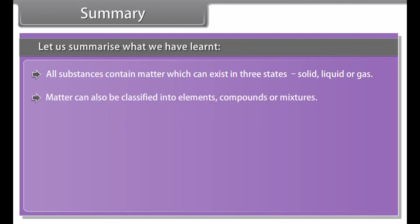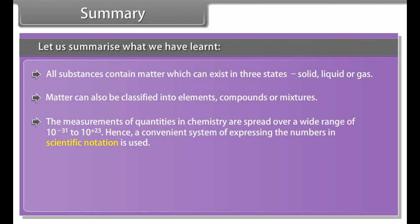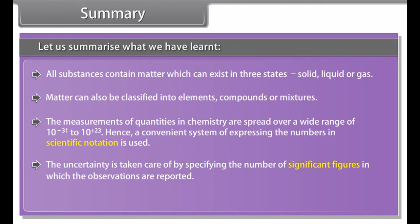Exact numbers have an infinite number of significant figures. For example, in two balls or 20 eggs, there are infinite significant figures as these are exact numbers and can be represented by writing infinite number of zeros after placing a decimal. That is, 2 equals 2.0000 or 20 equals 20.0000.